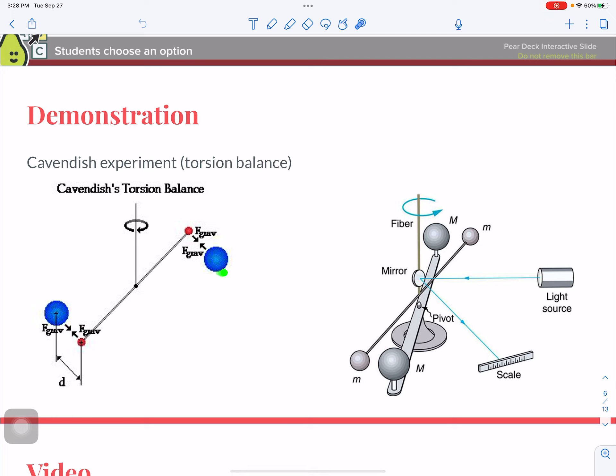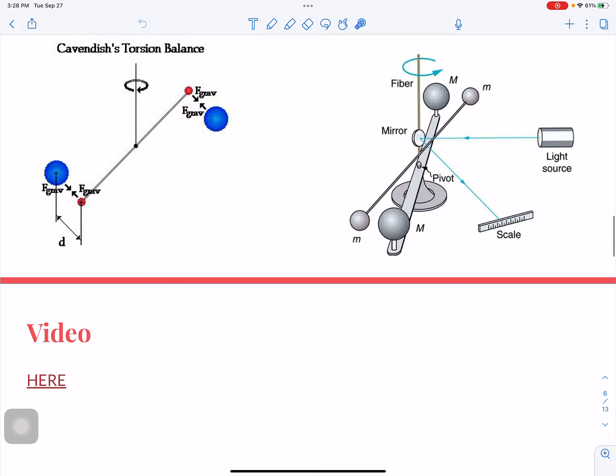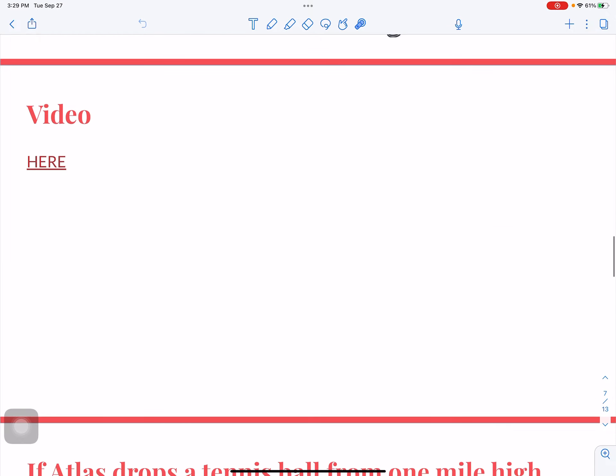And then he put two very large masses next to them that would attract these. So the idea is that if there was some attraction, there's nothing really impeding this motion. They should move towards each other. So Cavendish did this and he found out that they actually do attract each other. So I'm going to post a link for the video that you should definitely watch.